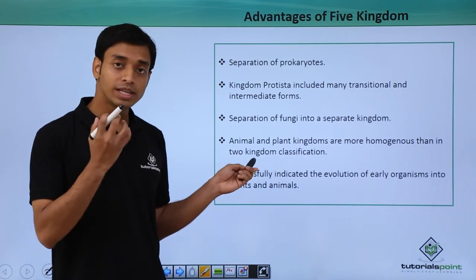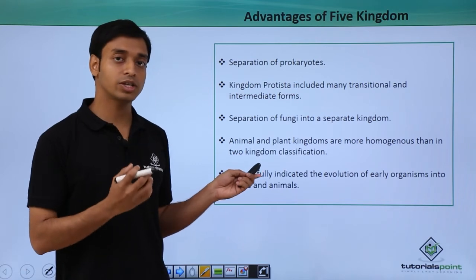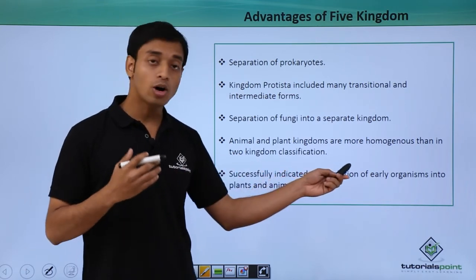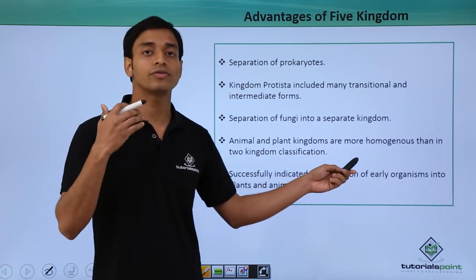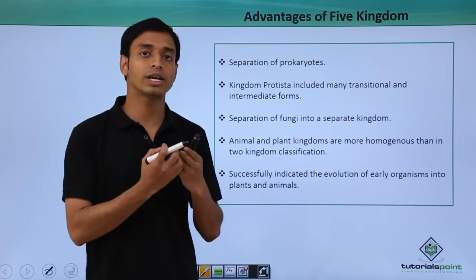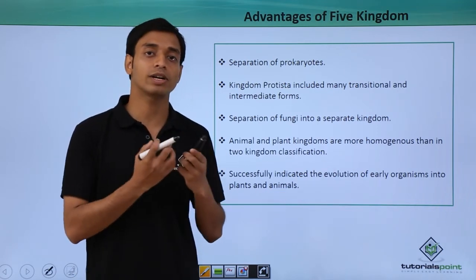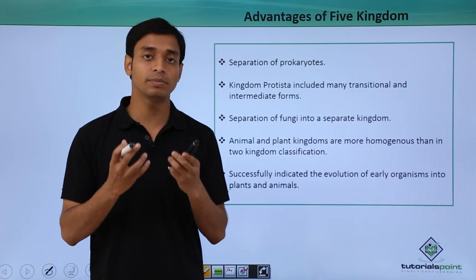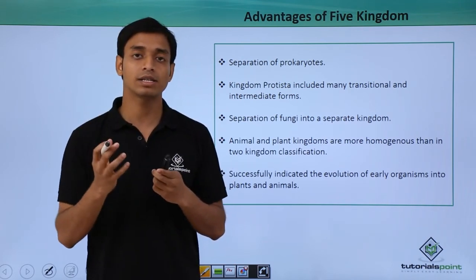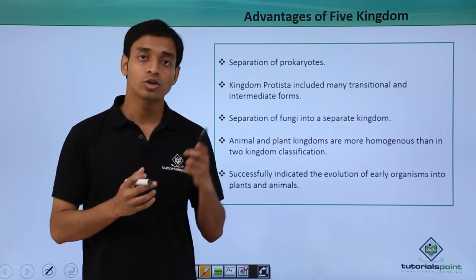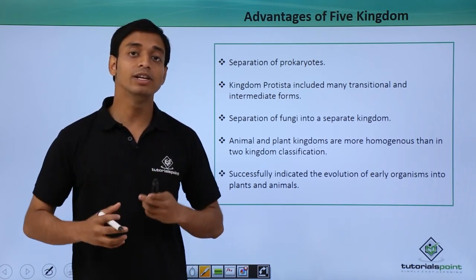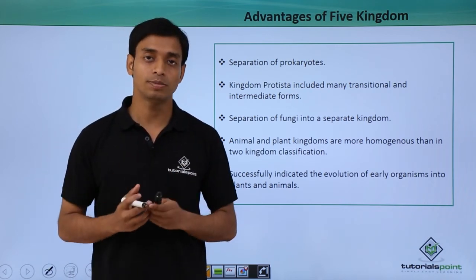This five kingdom system of classification successfully indicated the process of evolution — how from unicellular eukaryotic organisms, multiple complex multicellular eukaryotic organisms have evolved. So the five kingdom classification considered the evolution of species.